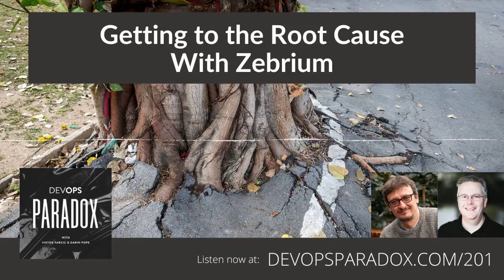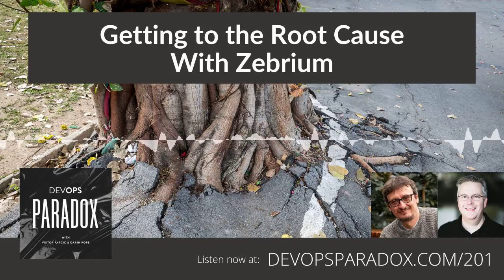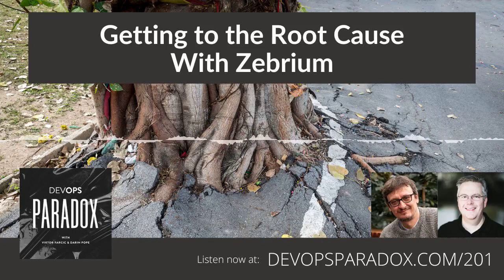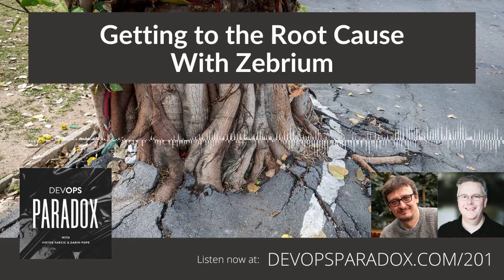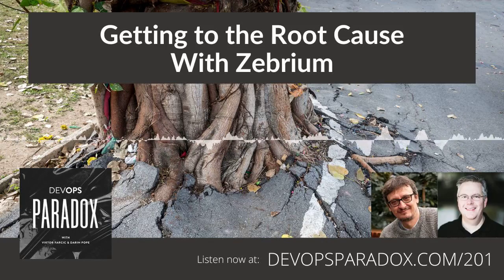Welcome to DevOps Paradox. This is a podcast about random stuff in which we, Darren and Victor, pretend we know what we're talking about. Most of the time, we mask our ignorance by putting the word DevOps everywhere we can and mix it with random buzzwords like Kubernetes, serverless, CICD, team productivity, islands of happiness, and other fancy expressions that make us sound like we know what we're doing. Occasionally we invite guests who do know something, but we don't do that often since they might make us look incompetent. The truth is out there and there is no way we are going to find it.